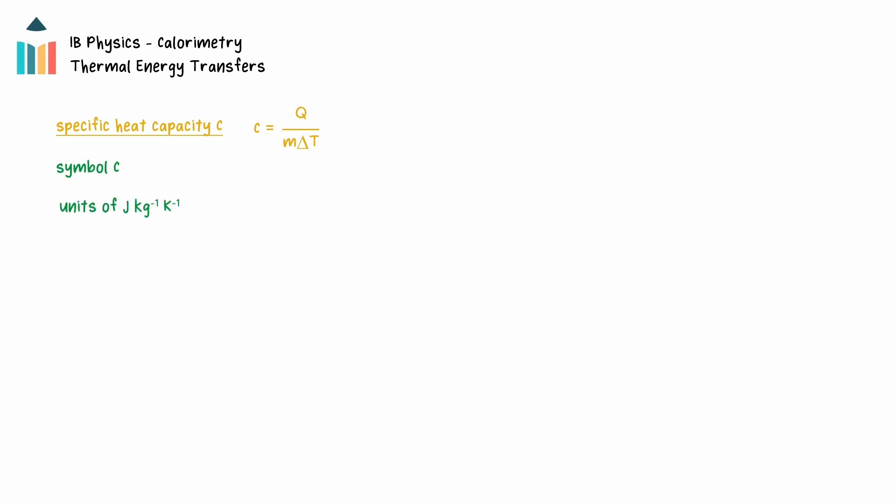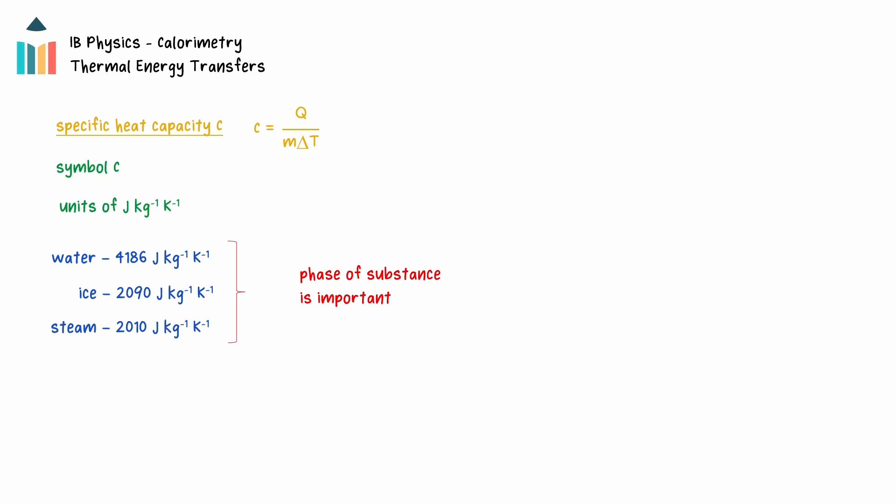The specific heat capacity of a substance is the energy required to change the temperature of one kilogram of the material by one degree Celsius or one unit of Kelvin. It has the symbol lowercase c and units of joules per kilogram Kelvin. Note that the phase of the substance will affect the specific heat capacity. The formula q equals mc delta T describes the amount of energy required for a given change in temperature of an object.